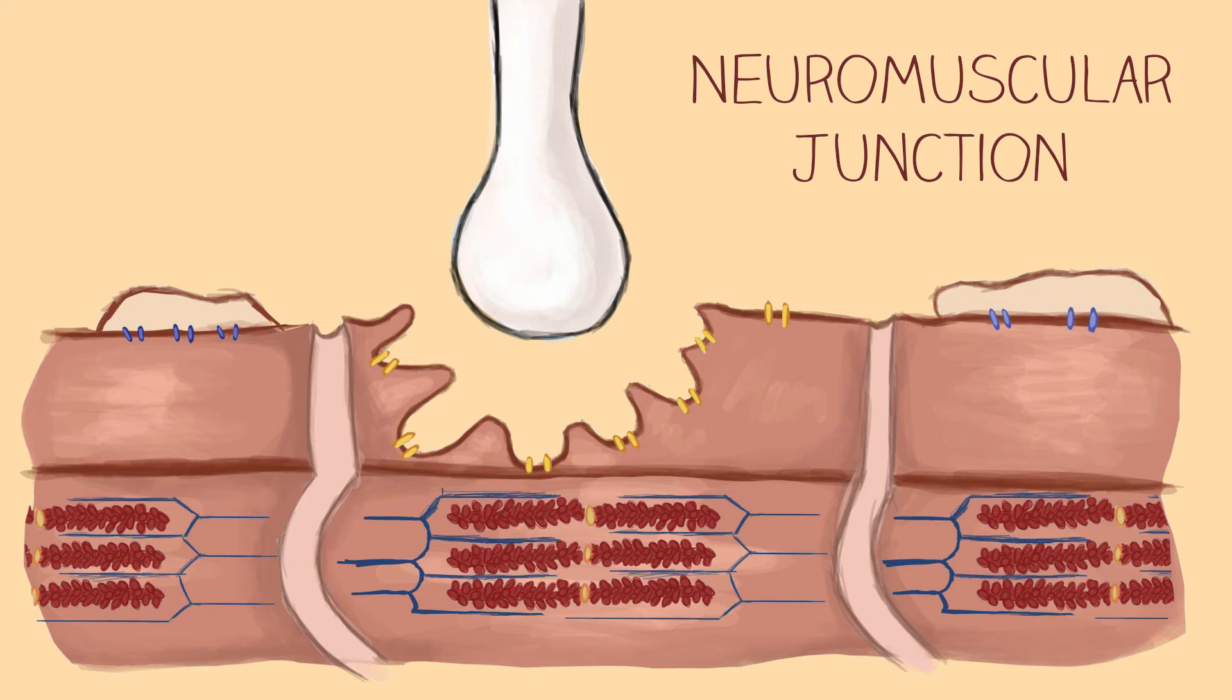The steps of muscle excitation involve three different electrical signals, also known as potentials: a somatic motor neuron action potential, a muscle end plate potential, and a muscle action potential.